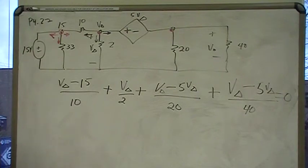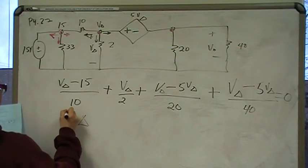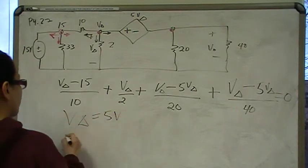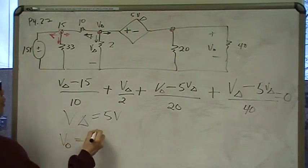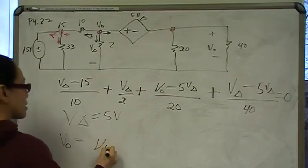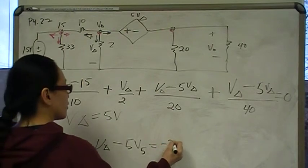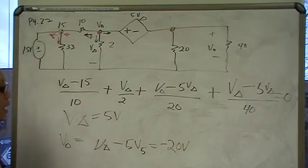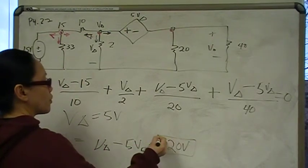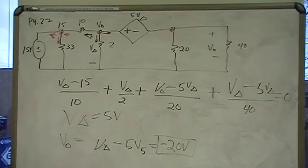Solve that and you should find that V delta is 5 volts and V out, which is, by the way, V delta minus 5 V delta is negative 20 volts. And that was what we were looking for. And that is the answer to this question.